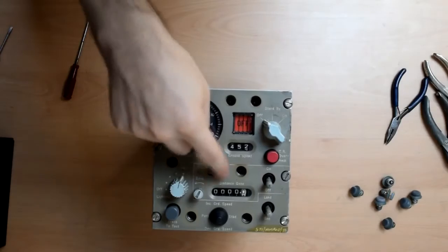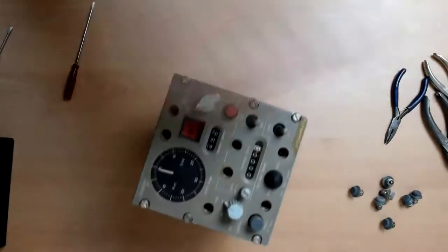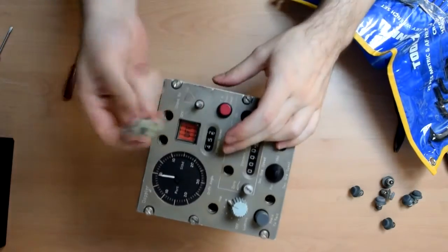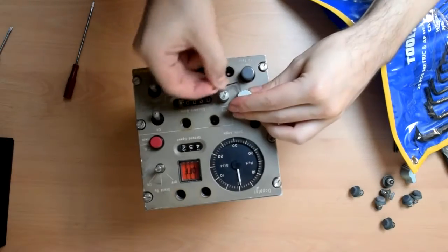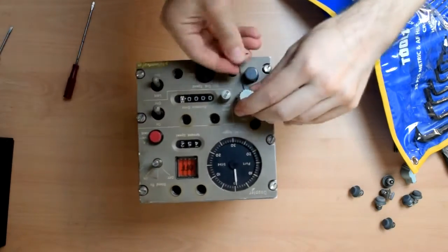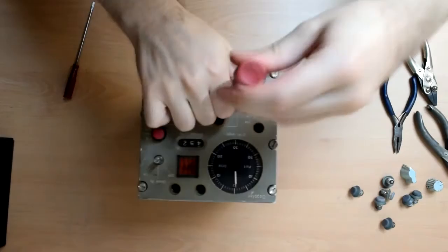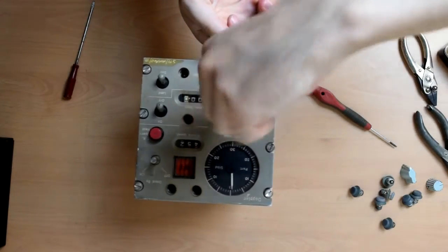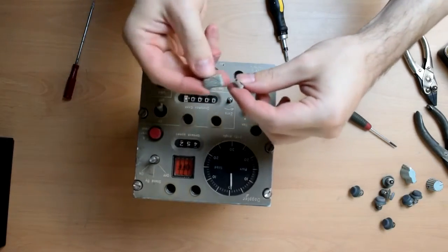You can see this has obviously had quite a lot of hours running. The heat from the lights has actually scorched the plastic around the holder as well. Normally I'd be a bit more gentle with these sort of connectors but this one's fairly gunged up anyway so it doesn't really make much difference.